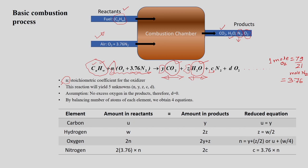The air contains 21% oxygen and 79% nitrogen. So 1 mole of oxygen is accompanied by 79/21, that is 3.76 moles of nitrogen. This is a simple equation to balance, and you can verify that 3.76 is the correct number.